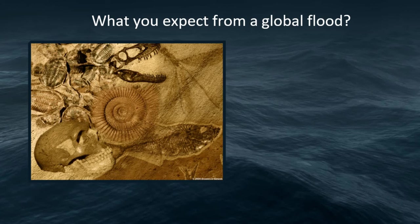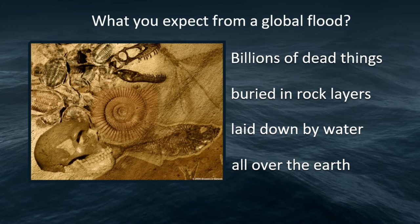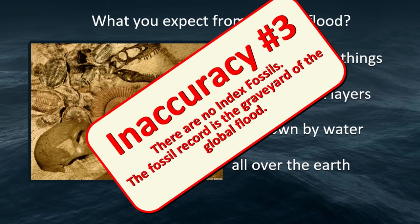Thinking about layers and index fossils — what would you expect from a global flood? Billions of dead things buried in rock layers laid down by water all over the earth, and that's what we see. Inaccuracy number three: there are no index fossils; two of the three are still alive today, dinosaur bones carbon-date to less than 95,000 years — and are only about 4,300–5,000 years old — and we're finding soft tissue. The fossil record is the graveyard of the global flood.